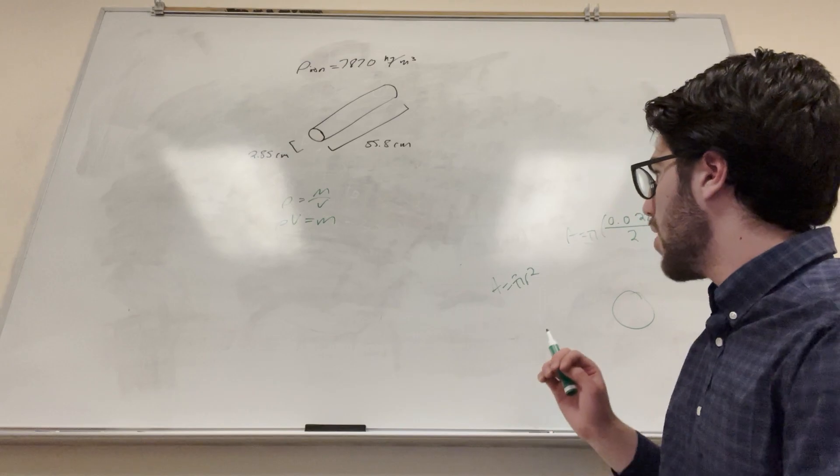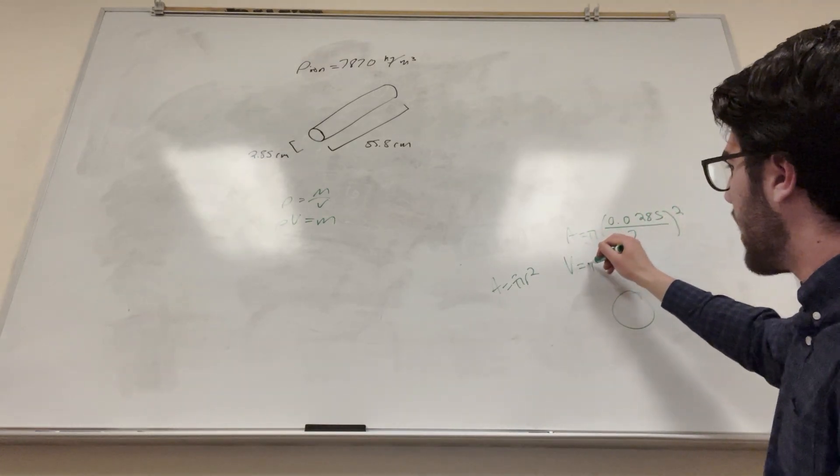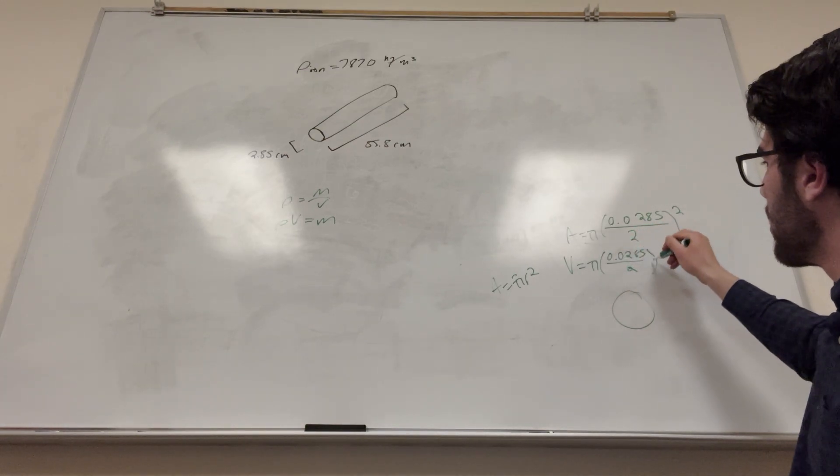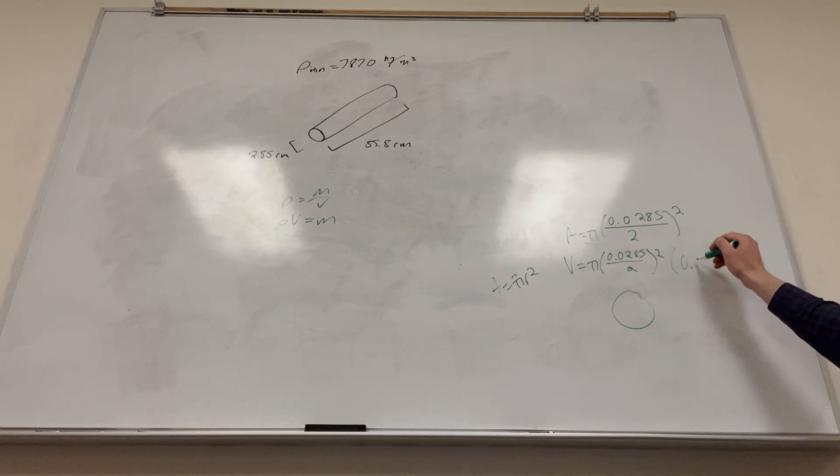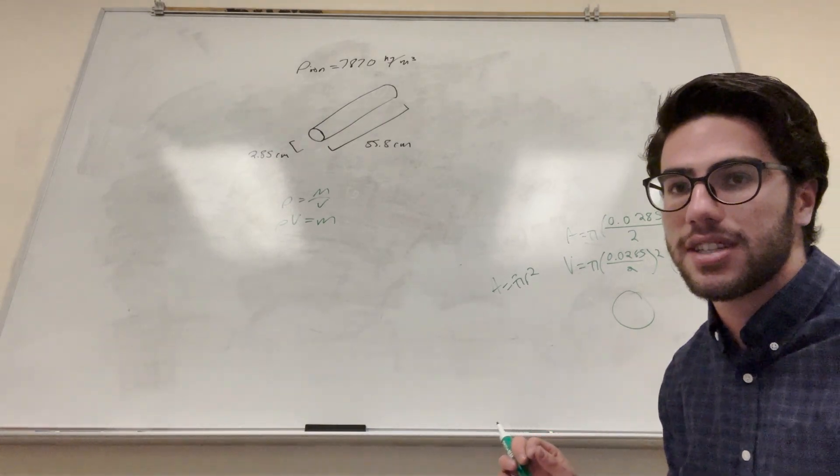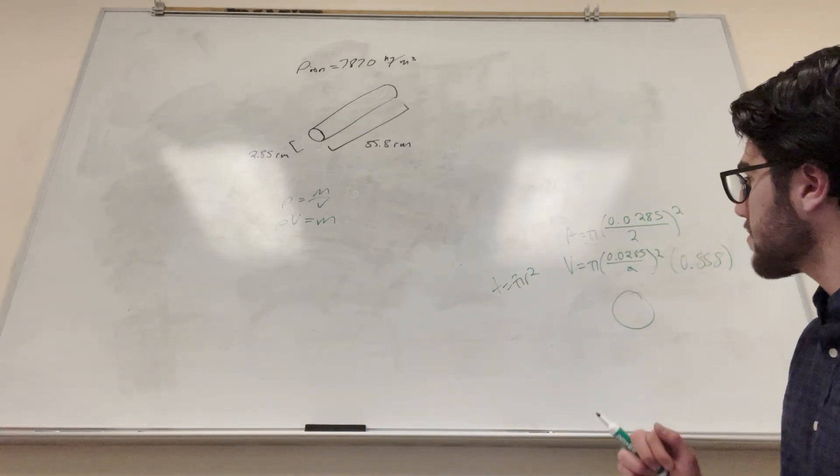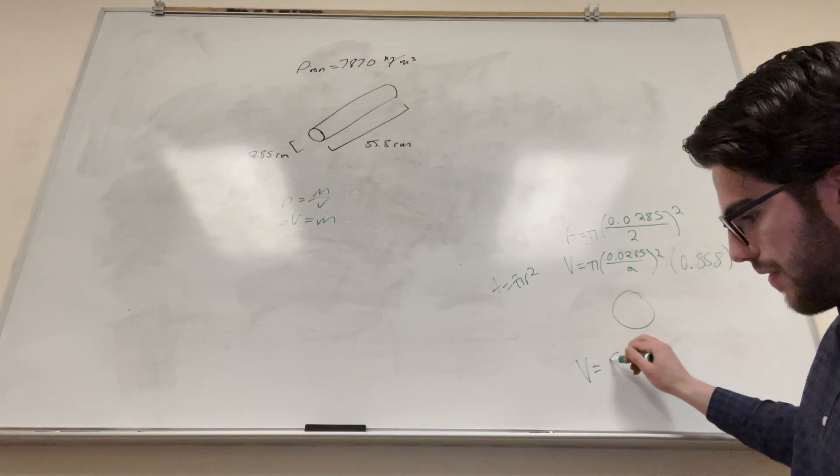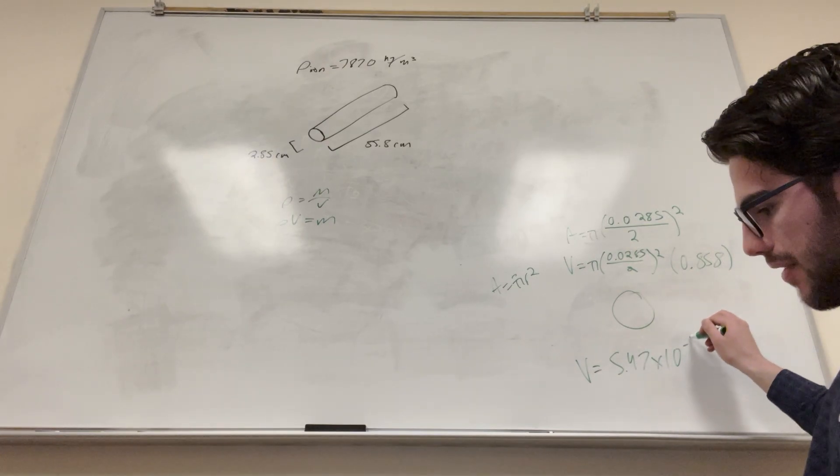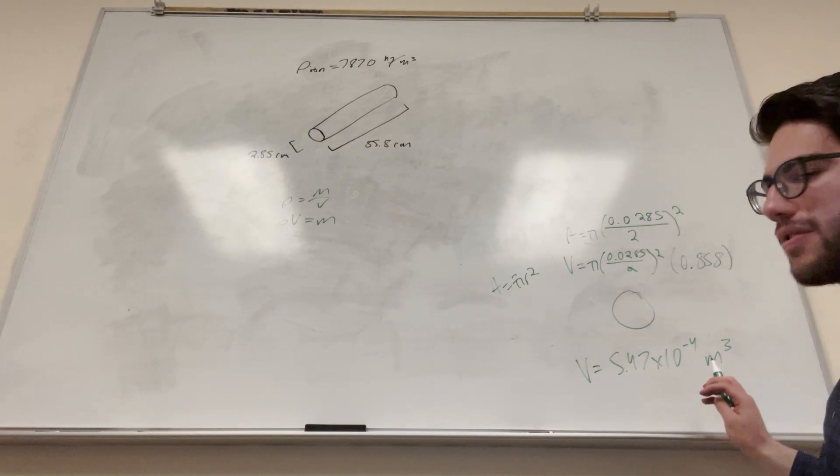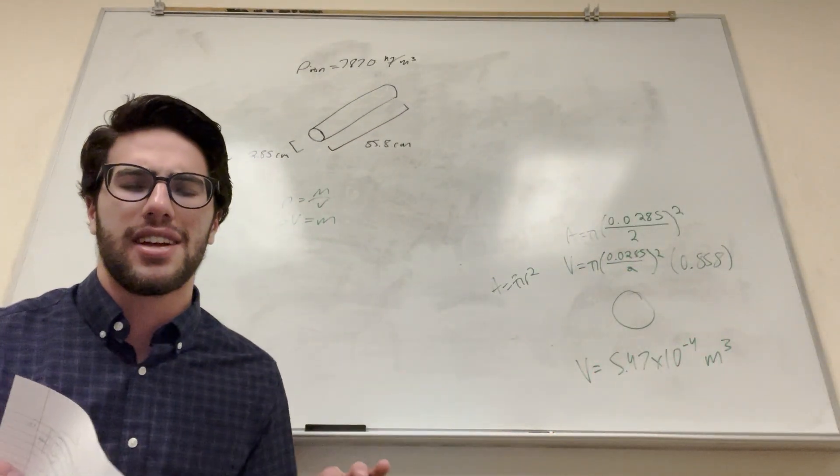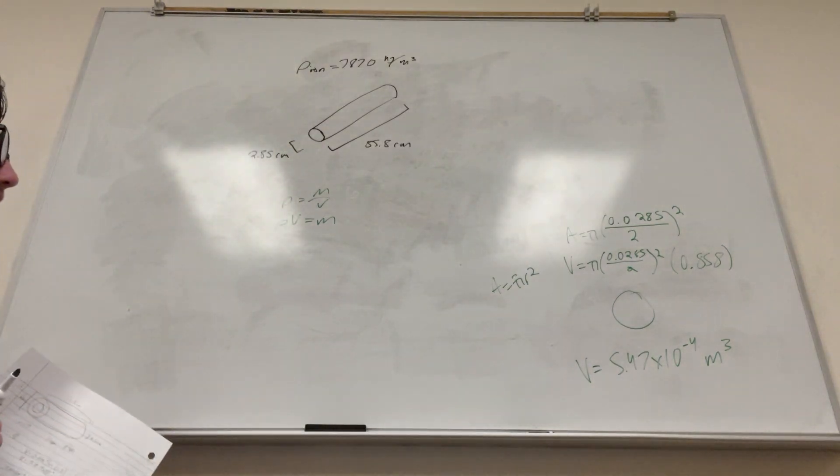But then if you want to find the volume, volume is going to be equal to pi times radius, 0.0285 over 2 squared, but then times the length, so we multiply that by 0.858 meters. We cannot use centimeters, we must use meters for this, because that's the unit that density is in. So if you calculate volume, if you multiply this out, you're gonna get 5.47 times 10 to the negative 4 meters cubed, which is a very small volume. But it kind of makes sense, right? It's not even a meter long and it's really thin, so it's not gonna take up much space.